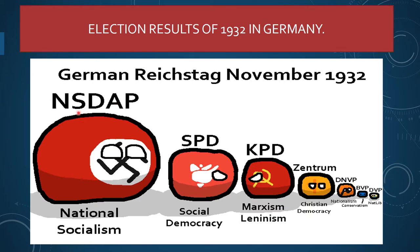The German political parties: National Socialism, SPD — Social Democracy, KPD — Marxism-Leninism, which was also known as the Communist Party, the Christian Democracy, and the National Socialist Party. These were the different political parties in Germany.